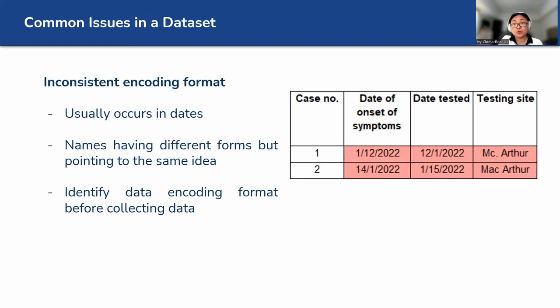Inconsistent encoding format. And we saw this a lot in local government units. Some would place it month, date, and year. The others would be date, month, and year. And then even the spelling of, let's say, the barangay might be different.